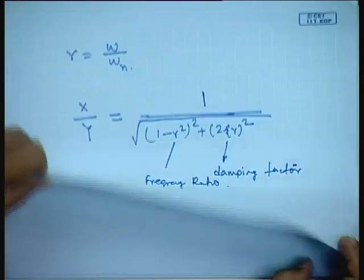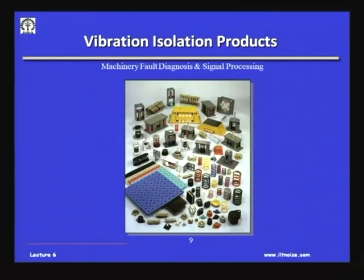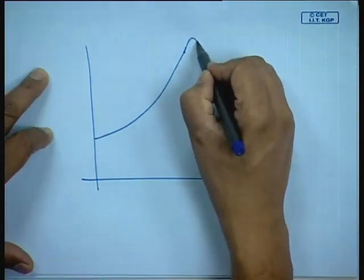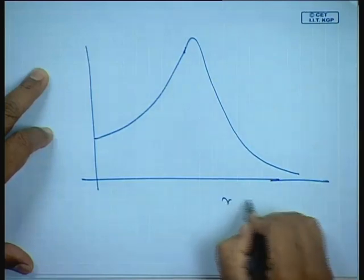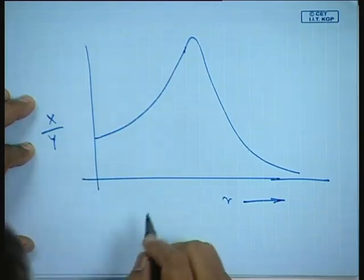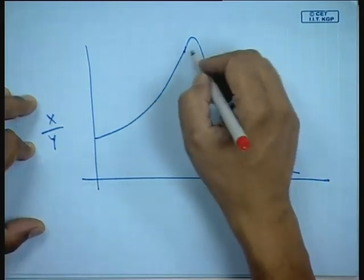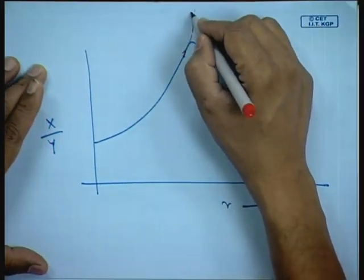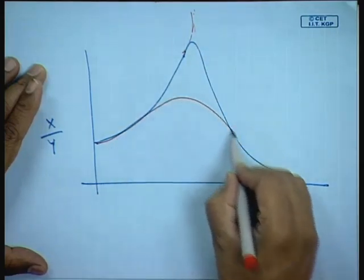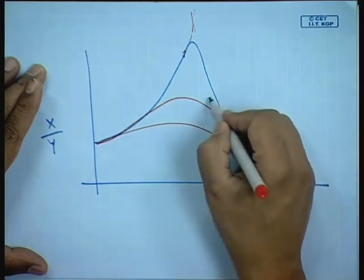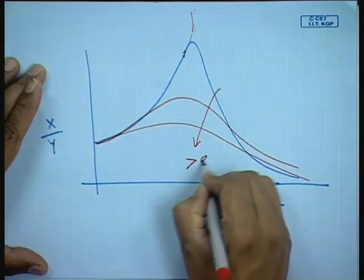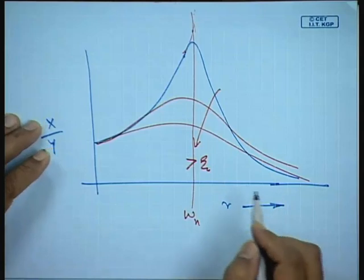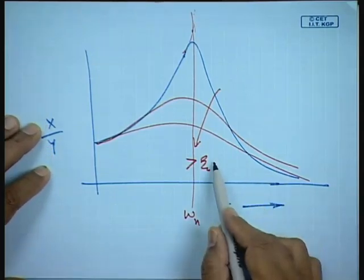If we plot the typical vibration response: if damping decreases slightly, amplitudes go up; if damping increases, amplitudes are reduced. At resonance, we can always reduce vibration by introducing damping.